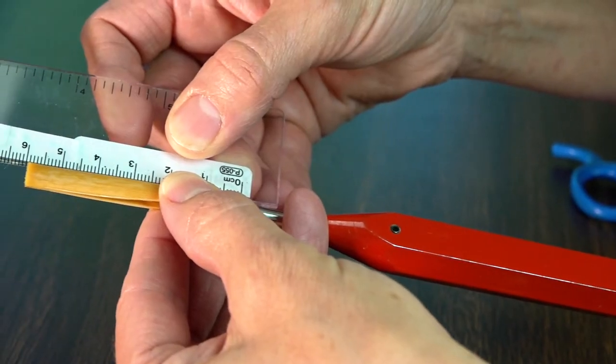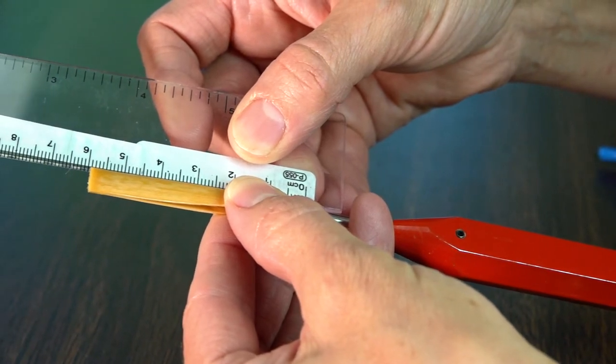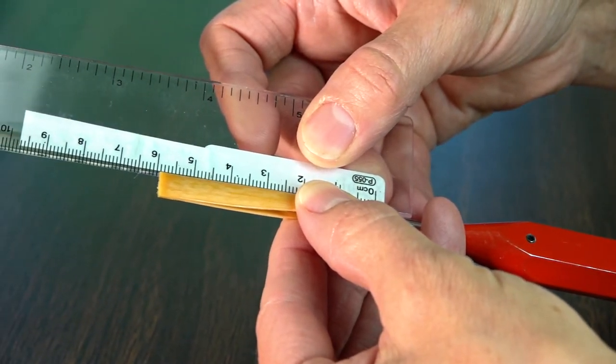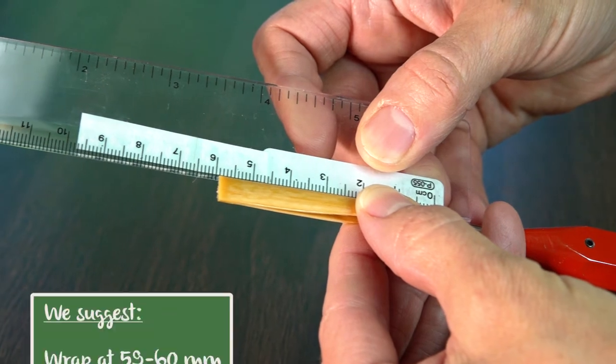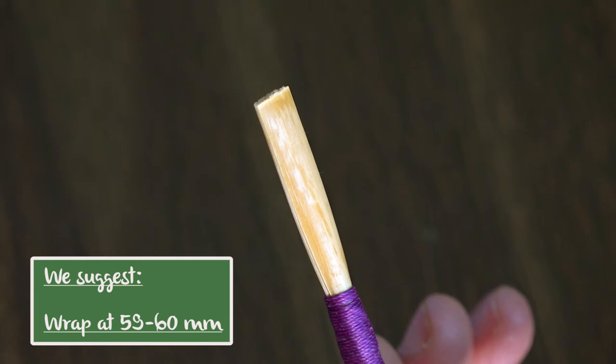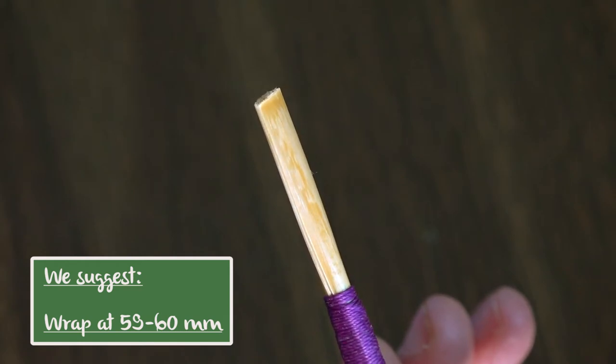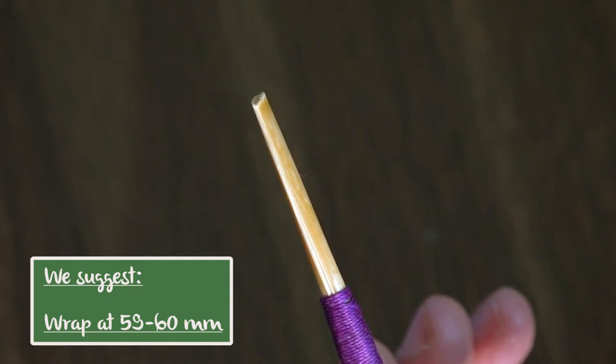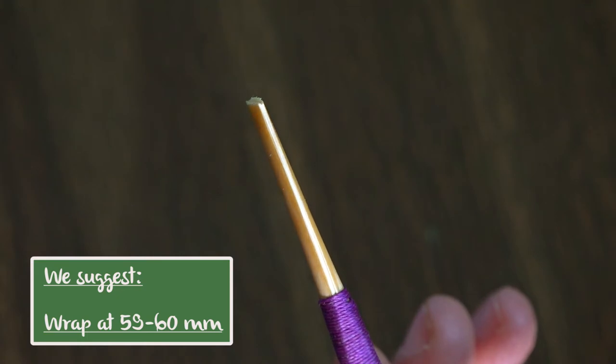The length at which you wrap your reed is dependent upon the shape of your cane and the size of your staple. Most reed makers wrap at approximately 59 to 60 millimeters, measuring from the bottom of the staple to the end of the cane. And, of course, an important consideration is that the cane needs to seal all the way up the sides.